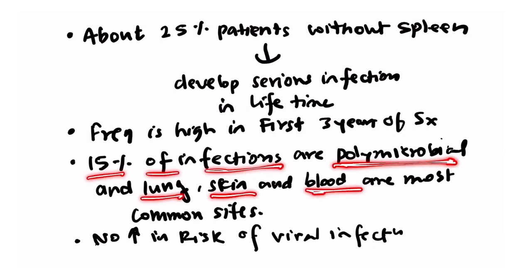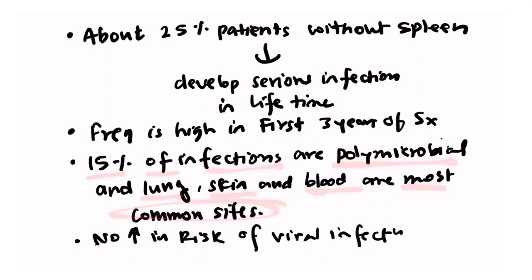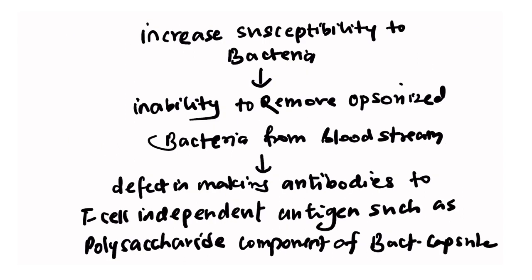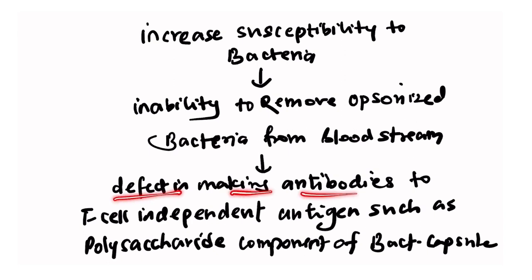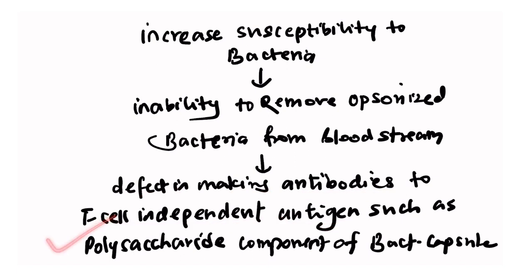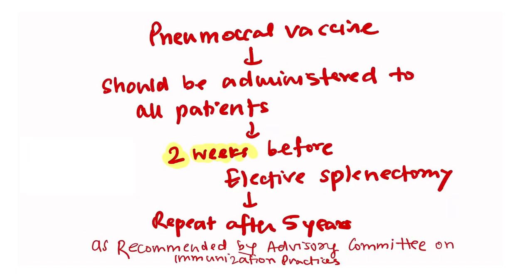15% of infections are polymicrobial, and the lung, skin, and blood are the most common sites. There is no increase in risk of viral infection. The increased susceptibility to bacterial infection in splenectomy patients is due to their inability to remove opsonized bacteria from the bloodstream, and also a defect in making antibodies to T-cell-independent antigens such as polysaccharide components of the bacterial capsule.